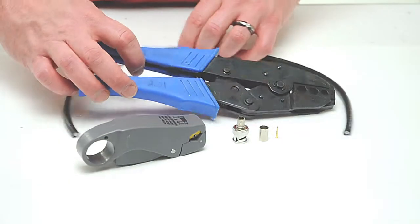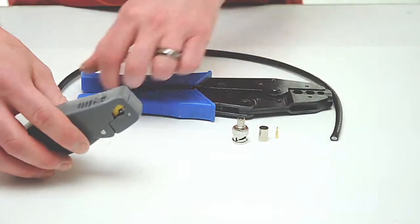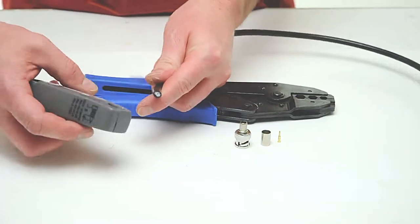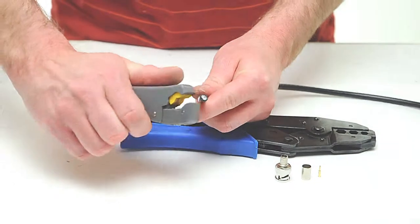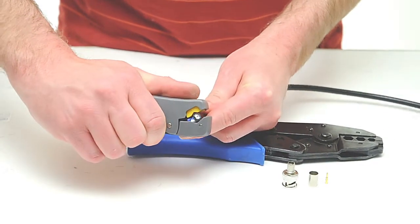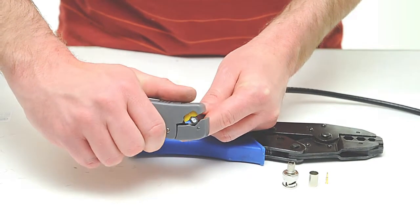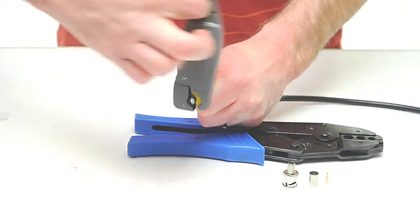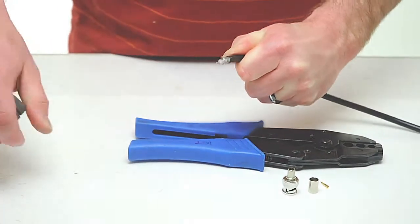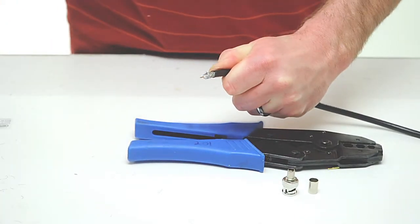To begin, take your coax stripper and remove the outer jacket and dielectric of the cable. The advantage of using a coax stripping tool is that it cuts both the outer jacket and dielectric at the same time. Rotate the tool a few times around the outside of the cable and peel the jacket off.